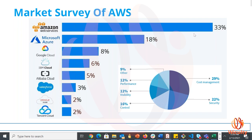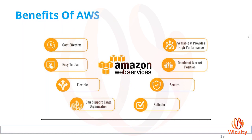The benefits of running your application in AWS include being cost-effective — you can save a lot of cost compared to on-premises using the pay-as-you-go model. It is easy to use once you have proper knowledge, and you can access AWS through multiple options like the Management Console, CLI, and SDKs. AWS services are also highly flexible, allowing you to configure them as per your needs.